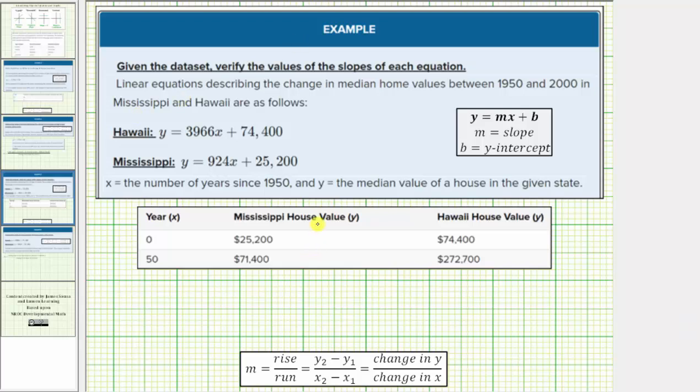Given the data set below, we're asked to verify the values of the slopes of each equation. Linear equations describing the change in the median home values between 1950 and 2000 in Mississippi and Hawaii are as follows, where for both equations x equals the number of years since 1950 and y equals the median value of a house in the given state.